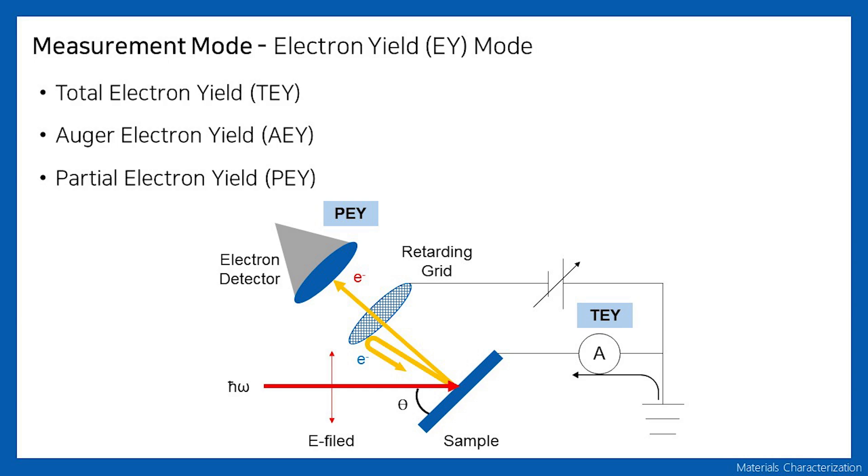The Auger electron yield mode usually shows information within a depth of 1 nm from the sample surface. The partial electron yield mode shows information by controlling the depth of sampling from 2 nm to 10 nm from the sample surface. The total electron yield mode can measure depth of 10 nm.